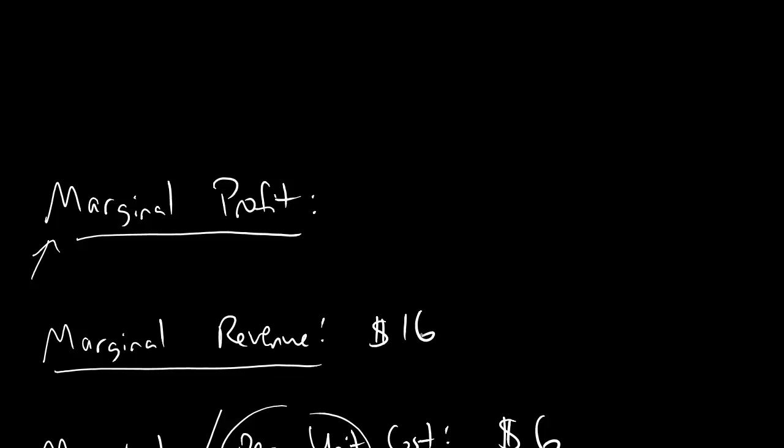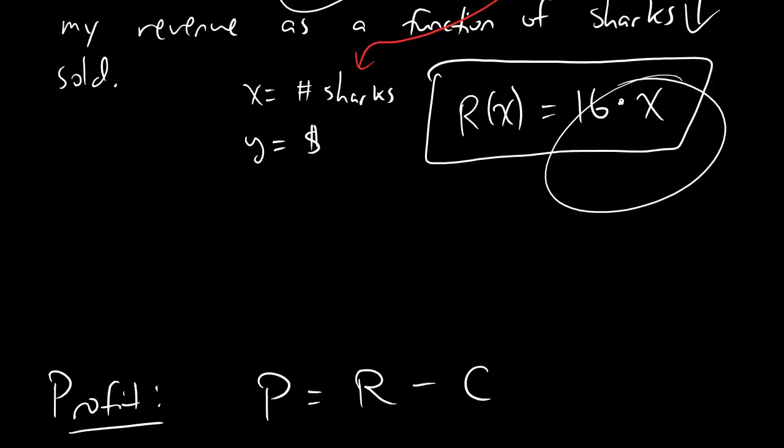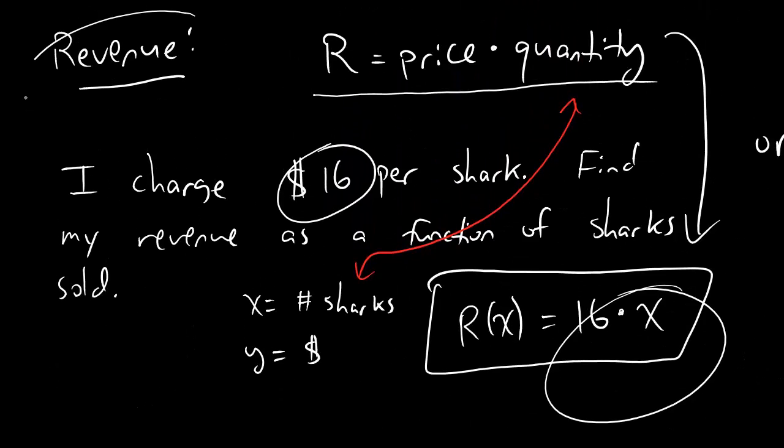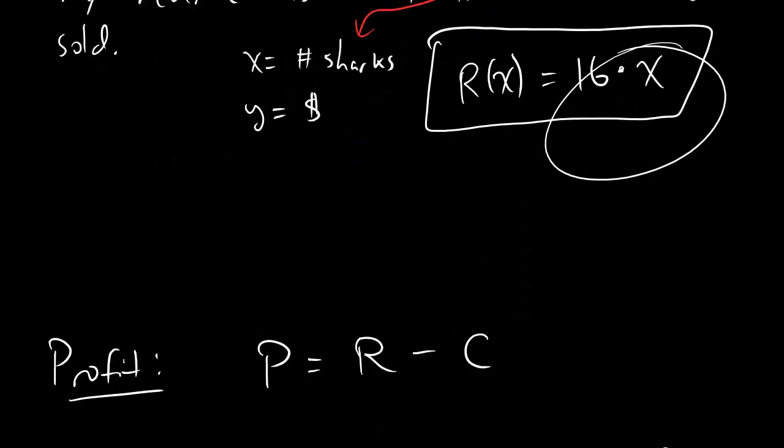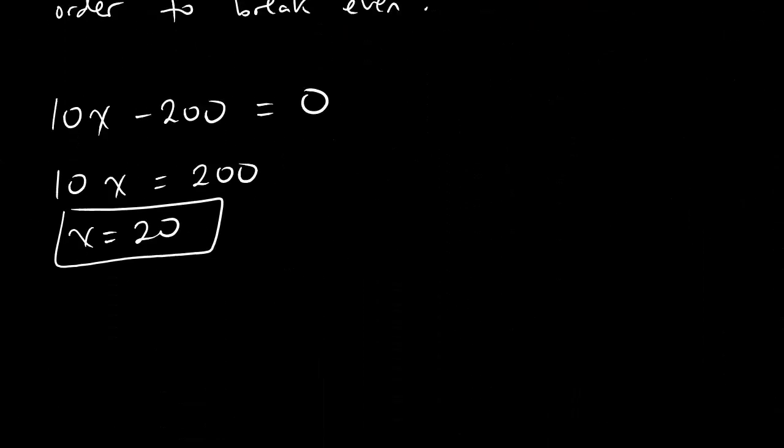If I sell one additional shark, I make $16 more revenue. So just to be clear, I got that $16 not from the profit function, but from the revenue function. So that's why it goes under marginal revenue.